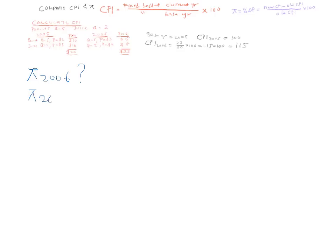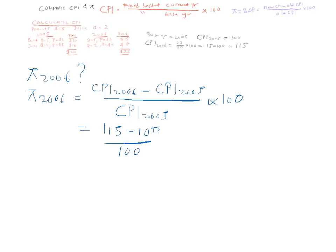So inflation in 2006 is going to be new CPI, CPI 2006, minus old CPI, CPI 2005, divided by old CPI 2005, times 100. 115 minus 100 over 100 times 100. 15 over 100 times 100. The two 100s cancel each other out, and your answer is 15%.